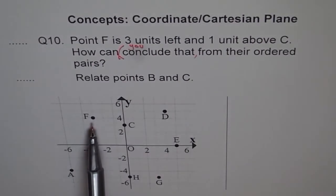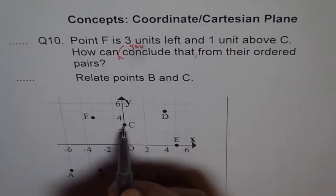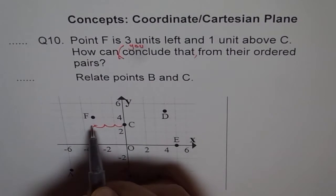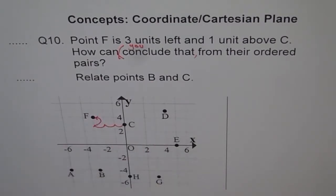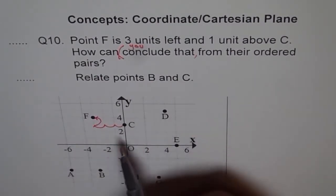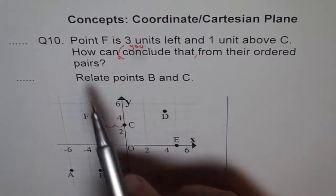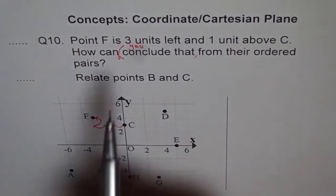So we see point F is 3 units left and 1 unit above C. How can you conclude that from their ordered pairs? I hope you understand. Sorry for the misprint.